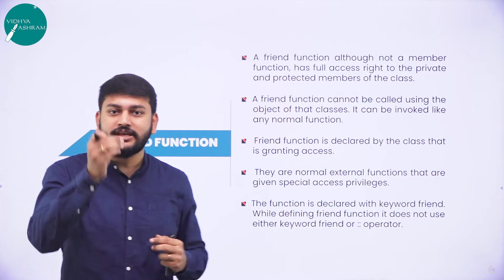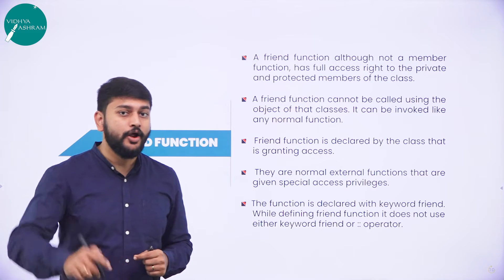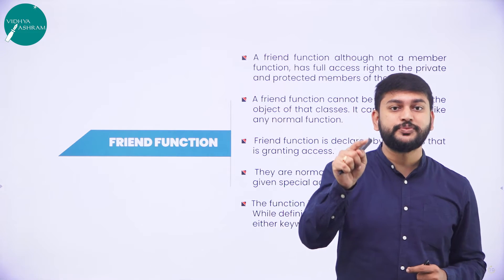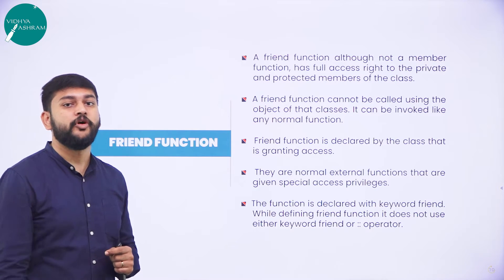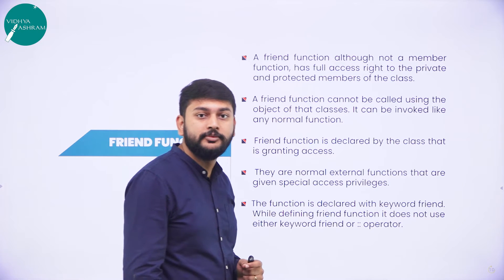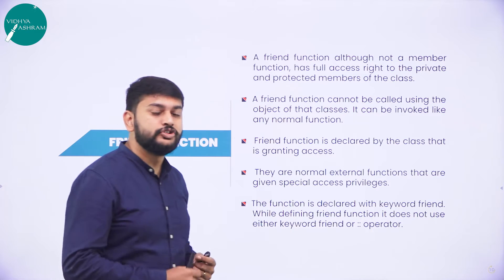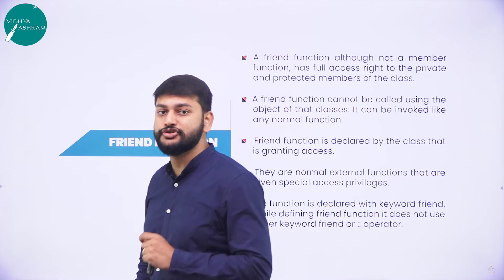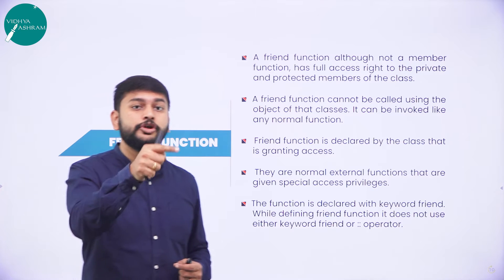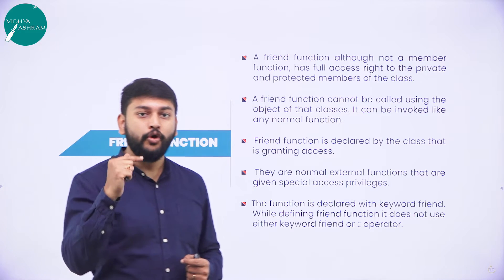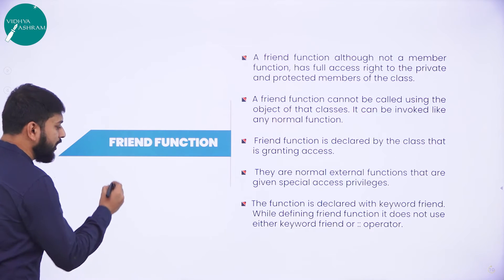Imagine you have a class and inside that class you are using a private access specifier. Whatever you declare inside the private access specifier only the class members can access — outside class members cannot access the data members declared under the scope of private or protected. But if I want to access the content under private or protected from outside, I need a solution. Suppose if I declare any function as a friend function of that particular class, that function — though it is not a member of that class — can still access the data members of that class.